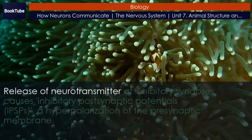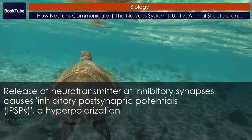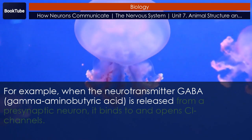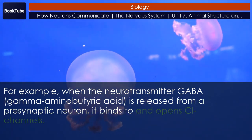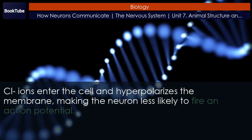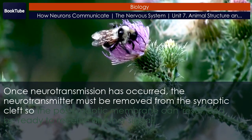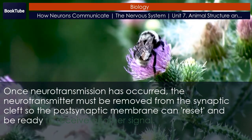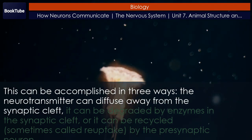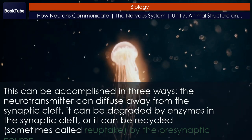Release of neurotransmitter at inhibitory synapses causes inhibitory postsynaptic potentials (IPSPs) — a hyperpolarization of the postsynaptic membrane. For example, when the neurotransmitter GABA (gamma-aminobutyric acid) is released from a presynaptic neuron, it binds to and opens Cl- channels. Cl- ions enter the cell and hyperpolarize the membrane, making the neuron less likely to fire an action potential. Once neurotransmission has occurred, the neurotransmitter must be removed from the synaptic cleft so the postsynaptic membrane can reset and be ready to receive another signal. This can be accomplished in three ways: the neurotransmitter can diffuse away from the synaptic cleft, it can be degraded by enzymes in the synaptic cleft, or it can be recycled — sometimes called reuptake — by the presynaptic neuron.